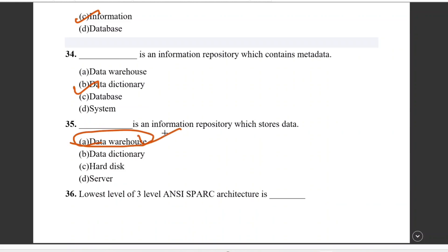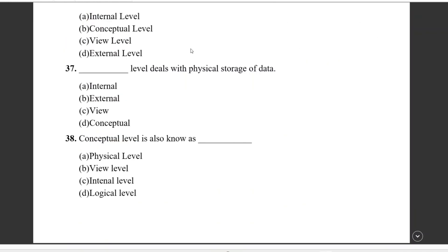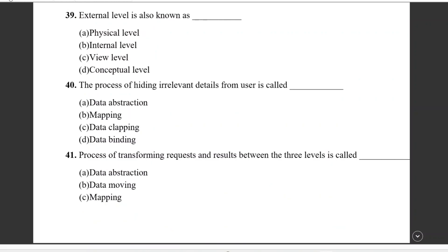Question thirty-one: a disadvantage of a database management system is the cost of hardware and software. Question thirty-two: when all operations are executed or none is executed, that is called atomicity — either do it completely or not at all. Question thirty-three: when data is processed, organized, structured, and presented in context to make it useful, it is known as information. Right answer is C.